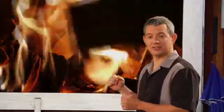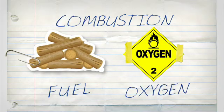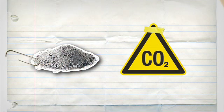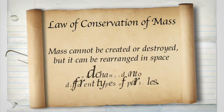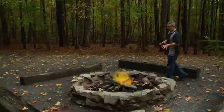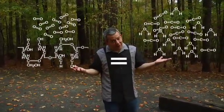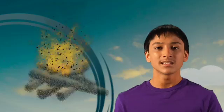What actually happens when something burns? Combustion is a chemical reaction that occurs between fuel and oxygen. The reaction causes the atoms in the fuel and oxygen to combine into new kinds of molecules. Just like any ordinary chemical reaction, the law of conservation of mass applies — mass cannot be created or destroyed, but it can be rearranged in space and changed into different types of particles. So when you burn that log in the bonfire, it's not exactly gone — all those molecules have just been turned into different molecules. All the stuff that goes into making combustion happen is still there after it happens, just in a different form.